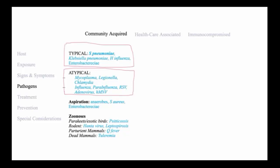With macroaspiration, anaerobes such as bacteroides, staph aureus, and enterobacteriaceae are predominant.